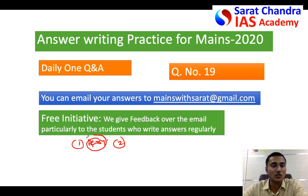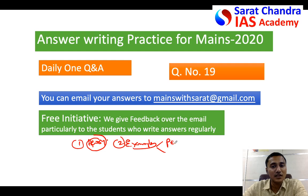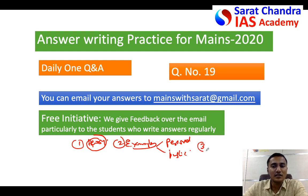If you write the theory in your own language, the evaluator will understand that you actually understood the concept. The second thing is: use examples. Always write examples in ethics answers, because even if you write the theory, the evaluator may not fully understand what you mean — but examples make it clear. Examples can be from your personal life, or public examples of an IAS officer, Gandhi, history, or current affairs.